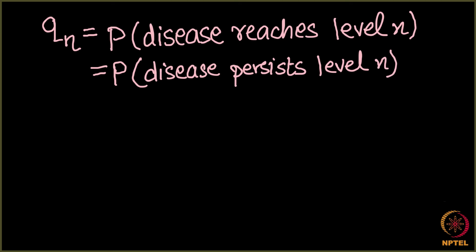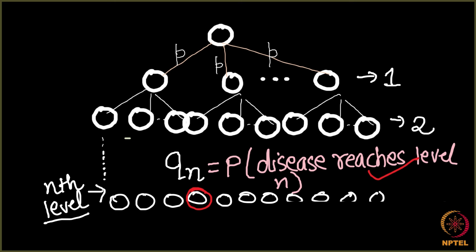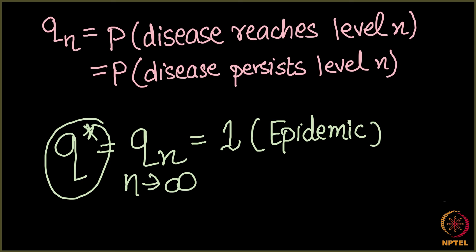Now, let me look at what this value represents. I take q* and define q* as q_n as n tends to infinity. It means I keep going down to the infinite level and ask: what is the probability that this disease is still persisting at that infinite level? That is q*. If q* is 1, it means that even at the infinite level the disease exists — meaning the disease is epidemic. If q* is 0, the disease has died away.